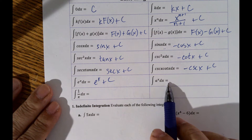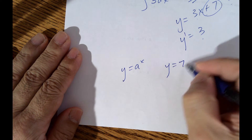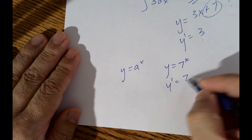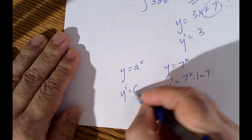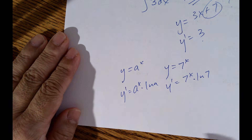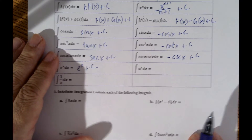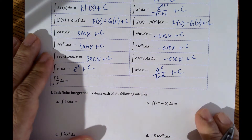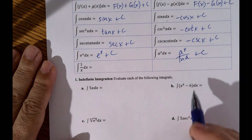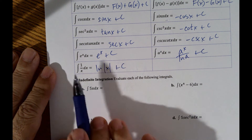Here's the weird one. A lot of you don't know the derivative of a to the x. If y equals 7 to the x, the derivative is 7 to the x times the natural log of 7. So the derivative of a to the x is a to the x times the natural log of a. When you integrate it, instead of multiplying by the natural log of the base, we divide by it: a to the x divided by the natural log of a, plus C. Also, the integral of 1 over x is the natural log of the absolute value of x.